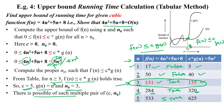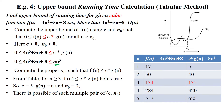There is the possibility of multiple such pairs. Because here we took 5n³, but if you substitute 4n³ instead, c will be 4 and n₀ will be different. That's why we say there is the possibility of multiple pairs for the given cubic function. Thanks for watching.